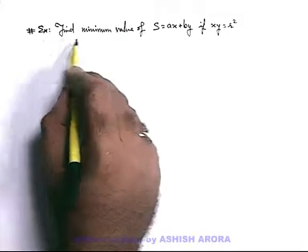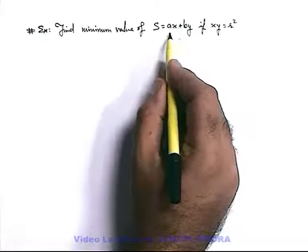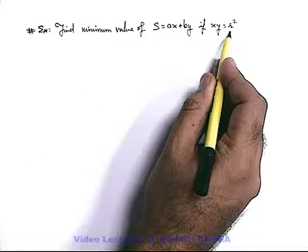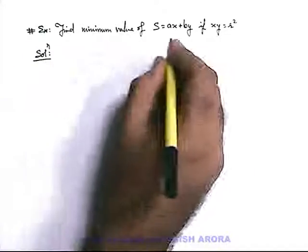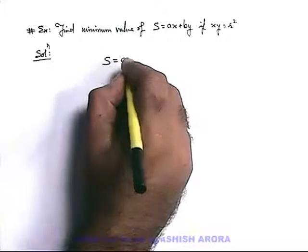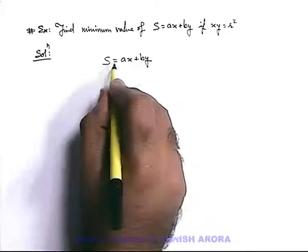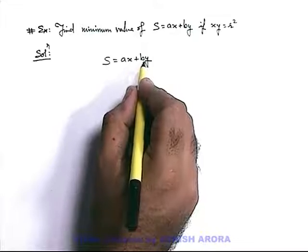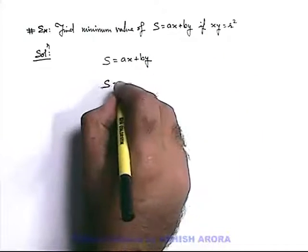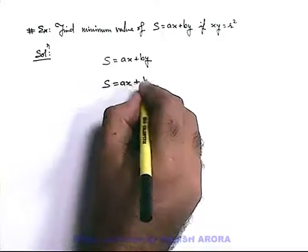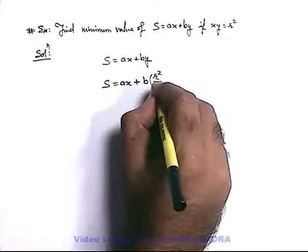Let's discuss an example. We are required to find the minimum value of s, which is given as ax plus by, if xy is equal to r squared. The value to be minimized is s, which is given in terms of two variables x and y. To maximize or minimize, we first need to express it in terms of a single variable. We can write s as ax plus b, and substitute y from the constraint as r squared by x.